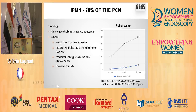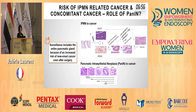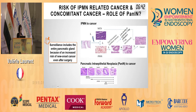When it is the branch duct that is involved, the risk of malignancy is low, but it is not zero. The risk of cancer comes from the IPMN itself, but also from the PanIN lesion — a pancreatic intraepithelial premalignant lesion developed on the small ducts of the pancreas. So it is crucial during follow-up to always examine the entire pancreatic gland to detect both types of cancer.